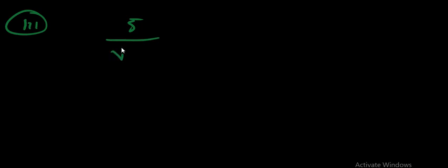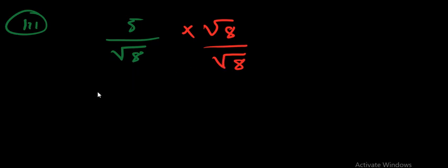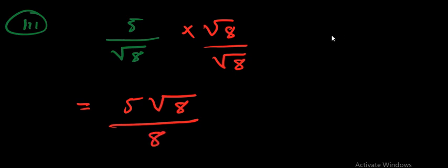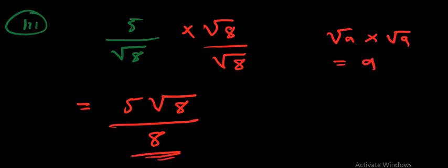For the third example, let's say you have been asked to rationalize 5 over square root 8. Here you don't need to find a conjugate. Instead, you are going to multiply by square root 8 over square root 8. That times that is simply going to be 5 square root 8 over 8, because square root a times square root a is simply equal to a. This is our solution for that example.